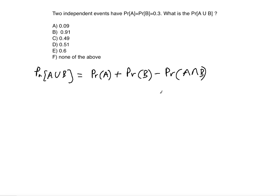Let's substitute in the numbers we know. The probability of A is 0.3 and the probability of B is 0.3 as well. We still need the probability of A and B. Since events A and B are independent, the probability of them happening at the same time is determined by the independence rule.